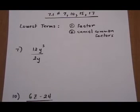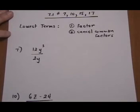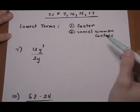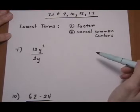7.1, number 7, 10, 15, and 17. These four problems all have to do with the idea of getting lowest terms for a rational expression. And what we want to do to find lowest terms is first factor and then cancel common factors.